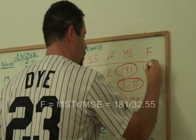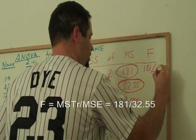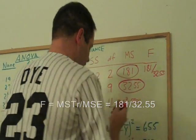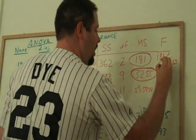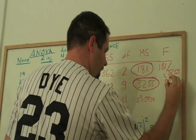So in this case, it's going to be 181 divided by 32.55. This number ends up being 5.56.